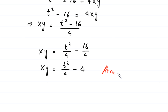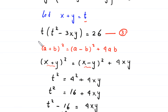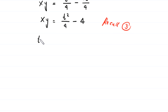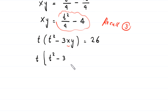Now we recall equation 3: t times t squared minus 3xy equals 26. In this equation we replace xy with the value t squared over 4 minus 4. So this equation becomes t times t squared minus 3 times the quantity t squared over 4 minus 4.